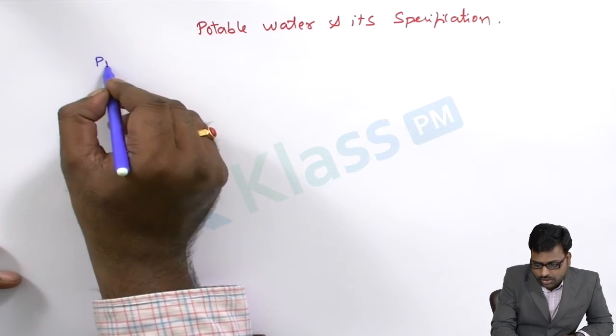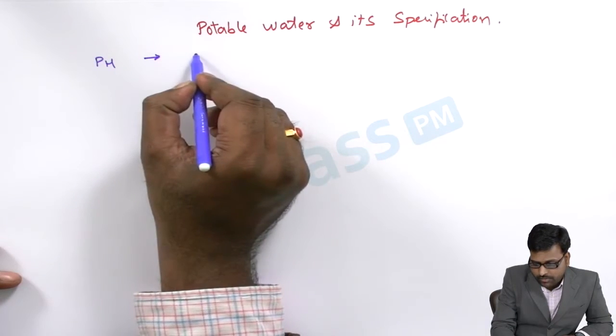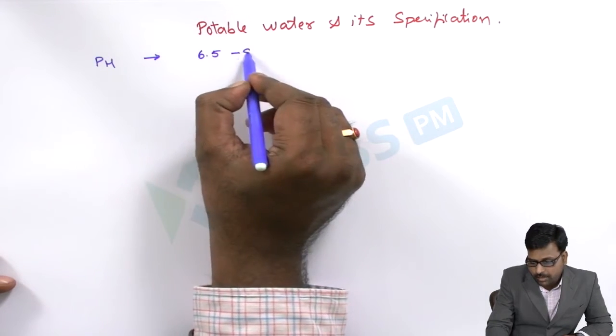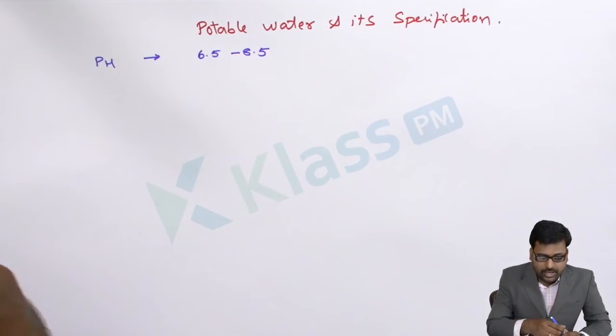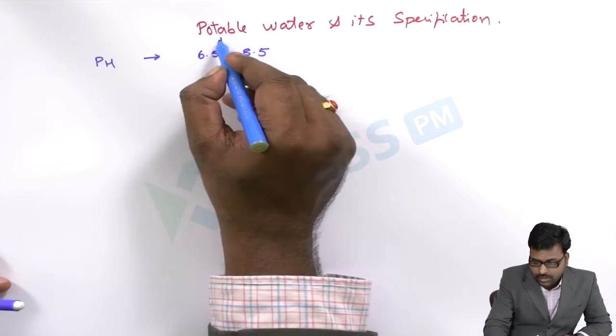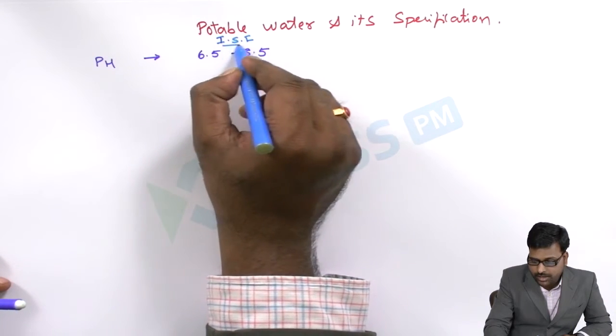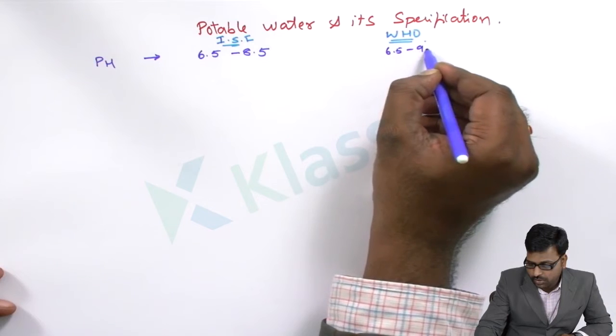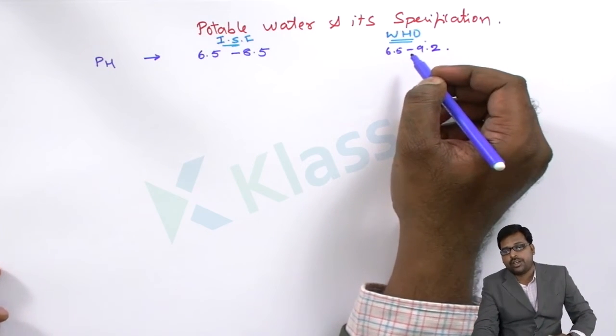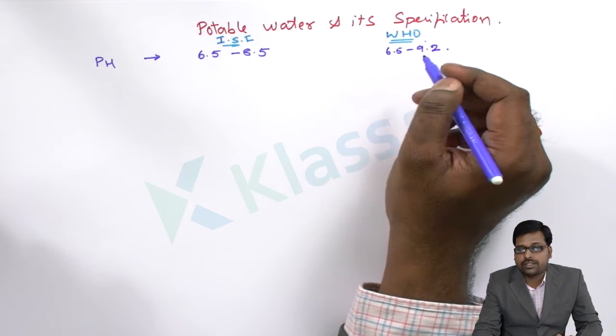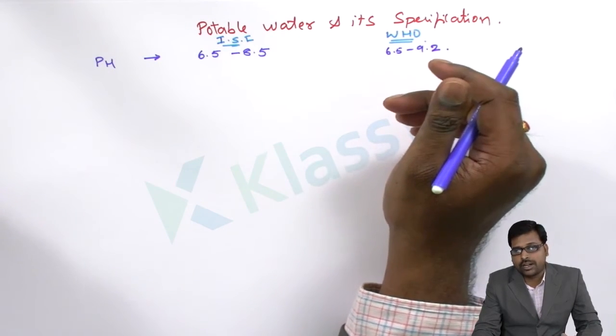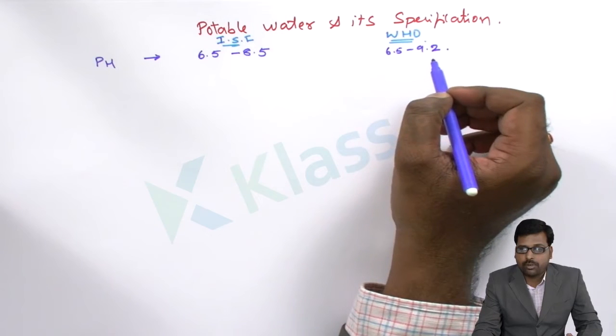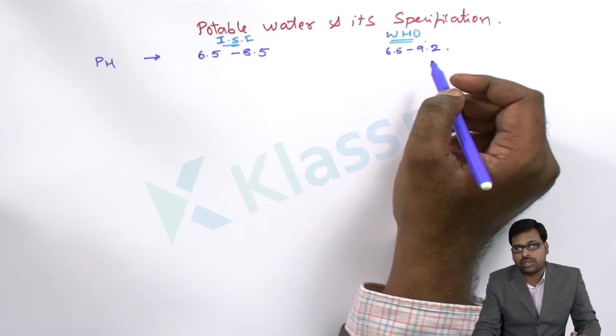First and foremost the pH of the water should be not more than 8.5 and not less than 6.5. So it should be 6.5 to 8.5 as per the Indian Standard Institute. As per WHO it is 6.5 to 9.2. Some variations will be there because WHO will deal with the countries which are underdeveloped countries as well as the developing countries and developed countries. So 6.5 to 9.2 pH can be potable in various cases throughout the globe.